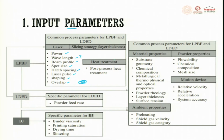Post-process heat treatment is used to remove residual stresses. For laser directed energy deposition, the specific parameter — apart from the above — is powder feed rate. For the binder jet process, specific parameters include binder viscosity, printing saturation, drying time, and sintering time.